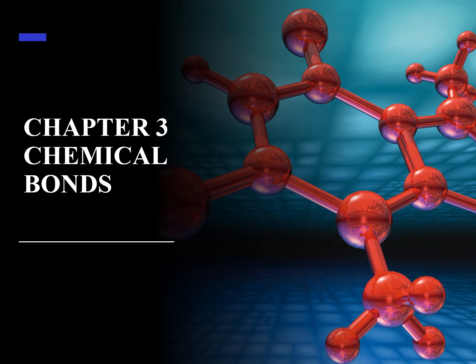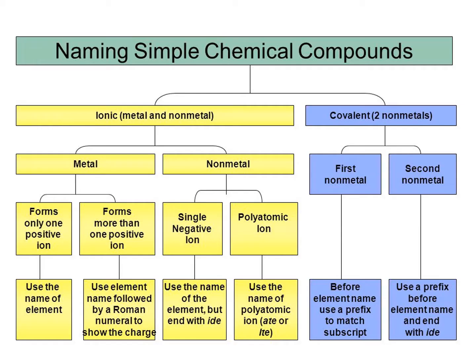Chapter three is on chemical bonds, which is how atoms are bonded together in a molecule. This chart shows an overview on how to name compounds. The first thing whenever you're naming compounds is to determine the type of compound you have — is it ionic or covalent? Because we have different sets of rules depending on what type of compound you have.